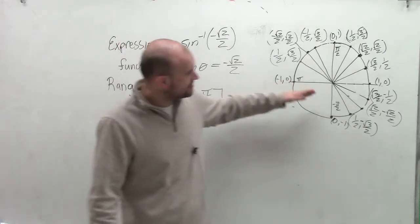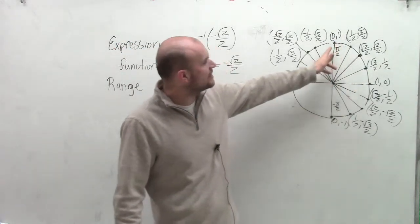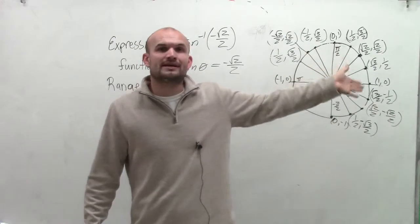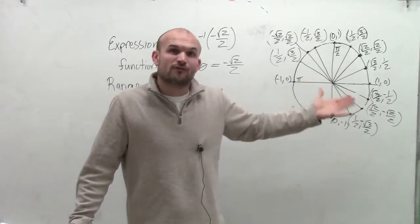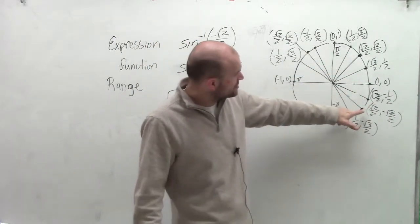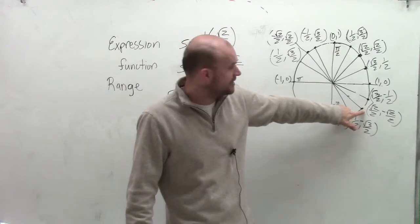So when looking, all I simply want to do within the fourth and the first quadrant is see when the y-coordinate is negative square root of 2 over 2, and for what angle. So we notice my angle is going to be at this point, for this coordinate point right here.